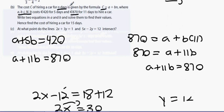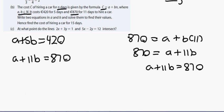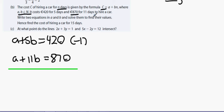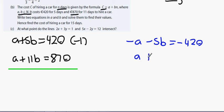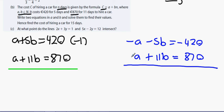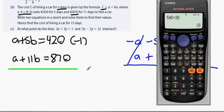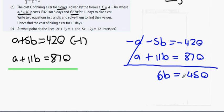To solve, I multiply the top equation by minus 1 to get minus a minus 5b equals minus 420. Adding to a plus 11b equals 870: the a's cancel, 11b minus 5b is 6b, and 6b equals 870 minus 420 which is 450. Dividing 450 by 6 gives b equals 75.